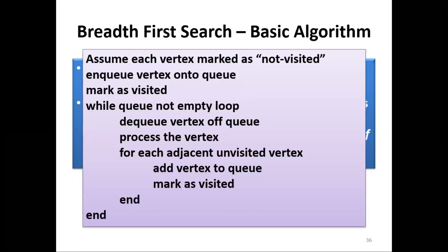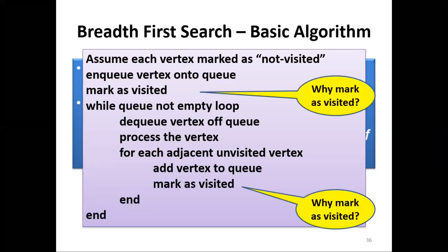The breadth first search algorithm: first assume each vertex is marked as not visited. Then enter the starting vertex into the queue and mark it as visited. While the queue is not empty, dequeue the vertex from the queue, process the vertex, and for each adjacent unvisited vertex, add it into the queue and mark it as visited.